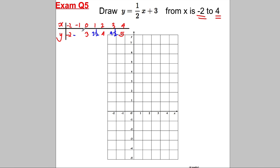For the odd x values: x = 1 gives ½ × 1 = 0.5, add 3 is 3.5. x = 3 gives ½ × 3 = 1.5, add 3 is 4.5. x = negative 1 gives ½ × negative 1 = negative 0.5, add 3 is 2.5. Now plot: negative 2 with 2, negative 1 with 2.5, 0 with 3, 1 with 3.5, 2 with 4, 3 with 4.5, 4 with 5. Again it makes a straight line.